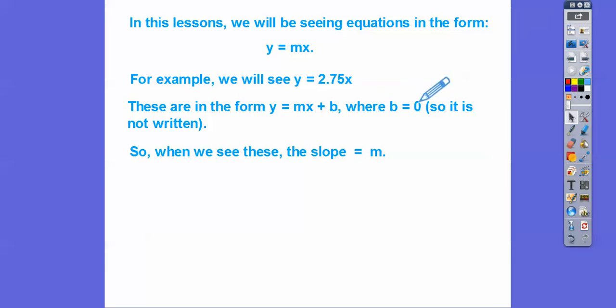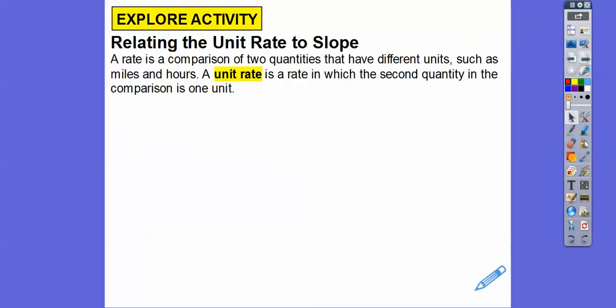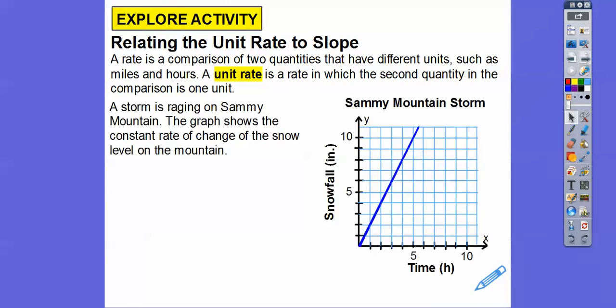The b equals 0 means the line is going through the origin, (0, 0). The number in front of x — as long as it's y equals some number times x — that's your slope. So relating unit rate to slope: a rate is a comparison of two quantities that have different units, such as miles and hours. Like, I drive 55 miles per hour commuting to work. A unit rate is a rate in which the second quantity — in this case, per hour — is 1. So I drive 55 miles per one hour.